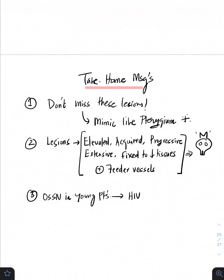If these lesions are going to be elevated, acquired, progressive, extensive lesions, and if they are fixed to the underlying tissues, and if they have feeder vessels, always please think of malignancy or pre-malignant OSSN lesions. And as always, any patients, especially if they are young presenting with any malignancies, think of an immunocompromised state or HIV status.